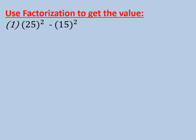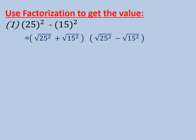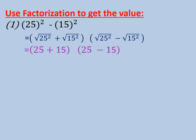It's a difference between two squares, so it will be (25 + 15)(25 - 15), which equals 40 times 10, which equals 400. Number 2: